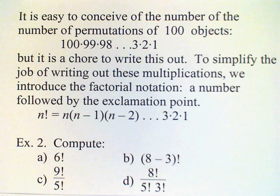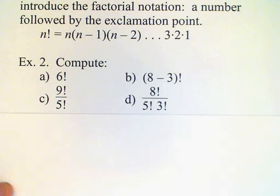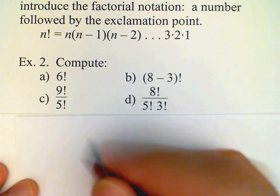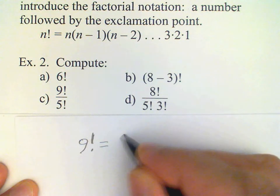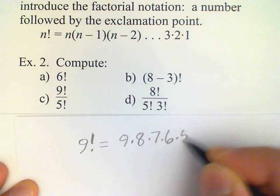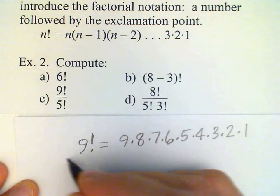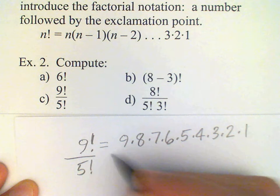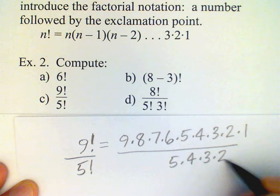In part C, we have to do 9 factorial divided by 5 factorial. And you could compute each of these numbers separately and then do the division. But there's a shortcut because we have 9 factorial is 9 times 8 times 7 times 6 times 5 times 4 times 3 times 2 times 1. And then if we want to divide that by 5 factorial, then we have 5 times 4 times 3 times 2 times 1 in the denominator.